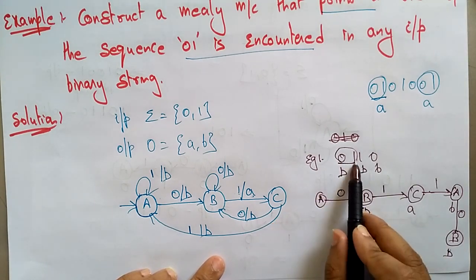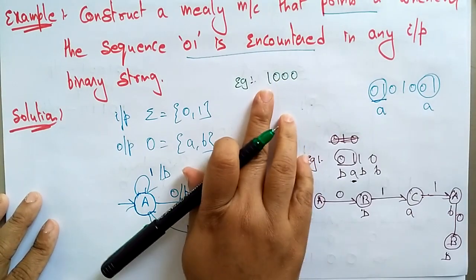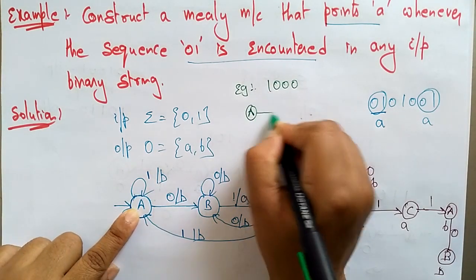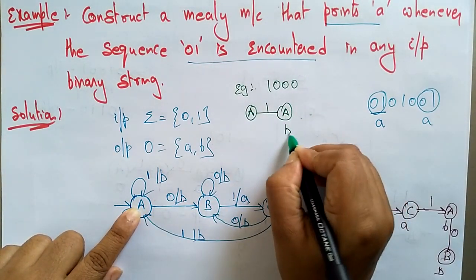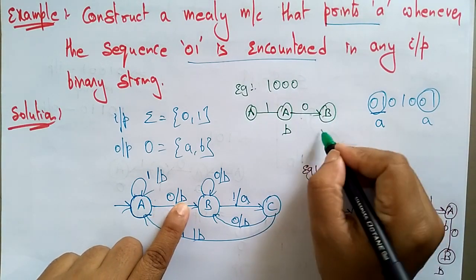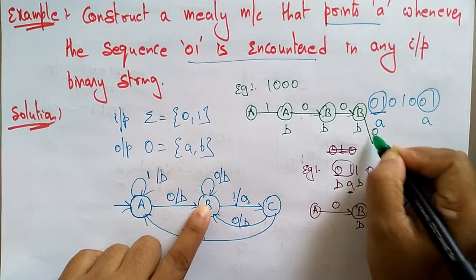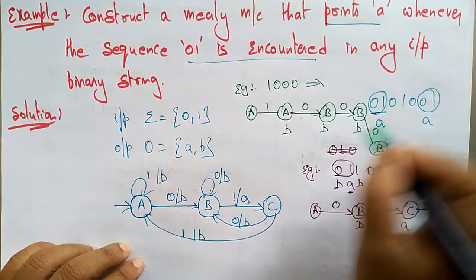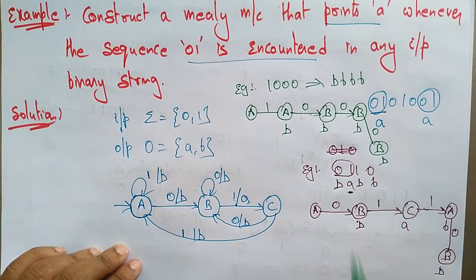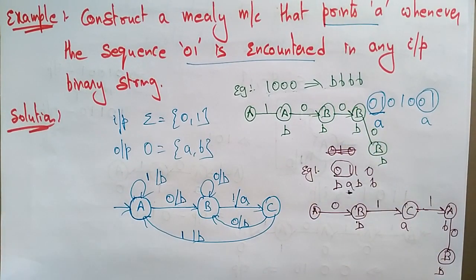Let me take another example: input '1000'. In this string there is no '01' sequence, so 'a' should not be encountered. Tracing: A on '1' stays at A, output 'b'. A on '0' goes to B, output 'b'. B on '0' stays at B, output 'b'. B on '0' stays at B, output 'b'. The output is all b's — 'a' is not encountered because the '01' sequence is not there.